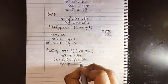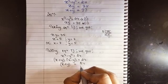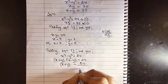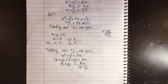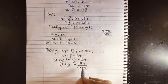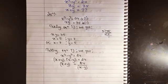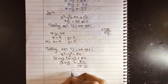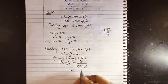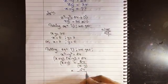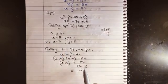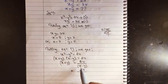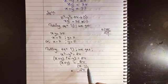We keep x plus y on the left-hand side and move x minus y to the right-hand side by dividing. So x plus y equals 24 divided by (x minus y).